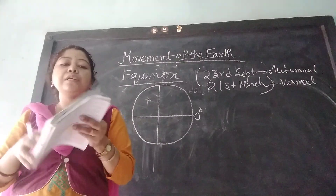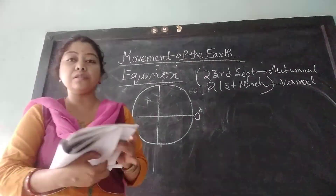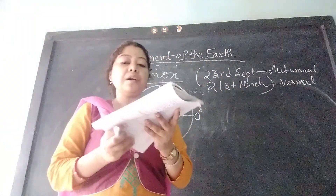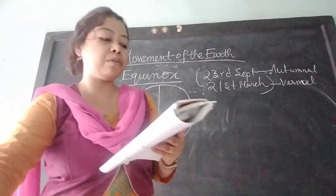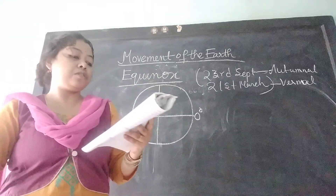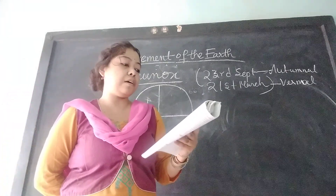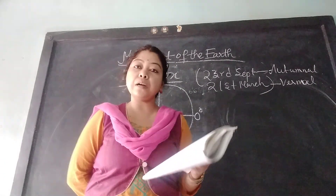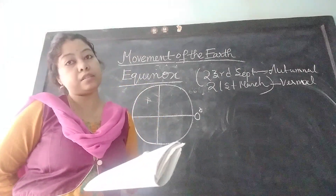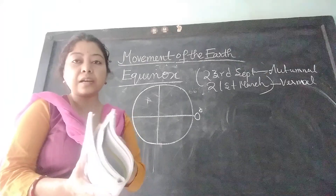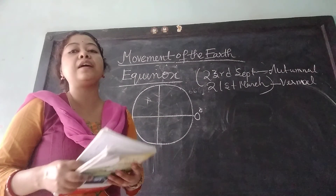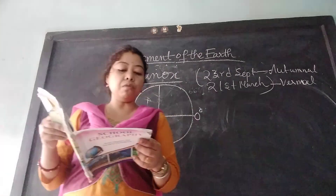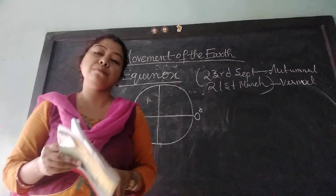Now we are going to the glossary part — that is the last part, page 28. From the glossary, you will read Aurora and solstice. These are very important. Whatever I have marked in the video or in the online class, please read that part. You should memorize the Aurora part and the solstice part.